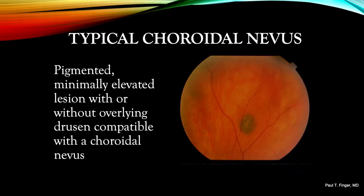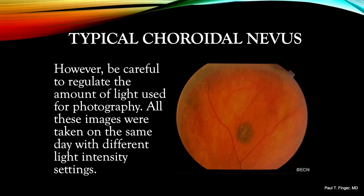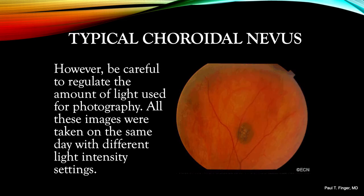Most choroidal nevi are benign and present as minimally elevated, moderately well-circumscribed tumors. This one has a few scattered overlying drusenoid retinal pigment epithelial detachments. However, be careful to photograph all pigmented intraocular tumors with the same amount of light. As you see here, despite all these photographs being taken on the same day, the light intensity appears to change the size. This is particularly important when comparing images to monitor for tumor change over time.